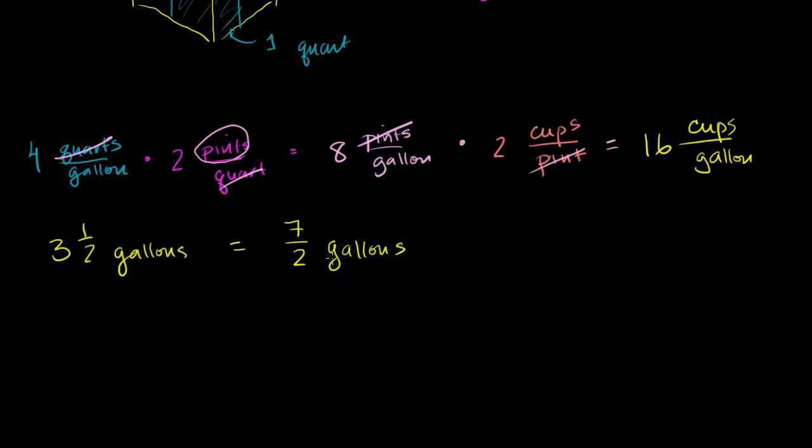So we have gallons in the numerator right here, or it's definitely not in the denominator. And so we want to divide by gallons. We want to divide by gallons. And then we're going to have a numerator. We have cups in the numerator. And how many cups are there per gallon? Well, we just figured that out. There are 16 cups per gallon. When you multiply these two quantities, the gallons will cancel out, and you'll just be left with cups. And that's what we wanted.